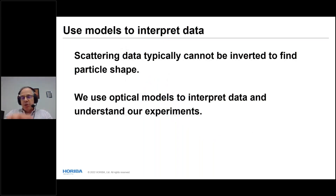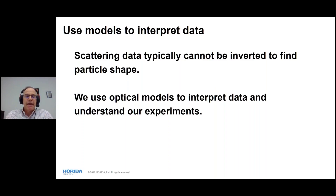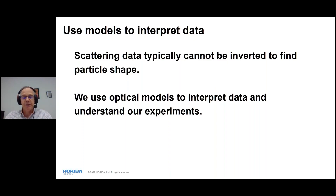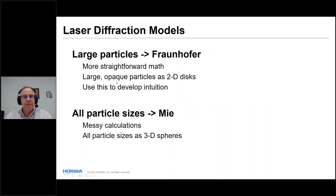With detectors at different angles, some will see a lot of light and some will see very little. We use optical models to invert this data and find a particle size distribution. Think of it as a magic box where you press the button and the answer comes out — that's correct in practice. The math behind it involves two models: Fraunhofer and Mie.